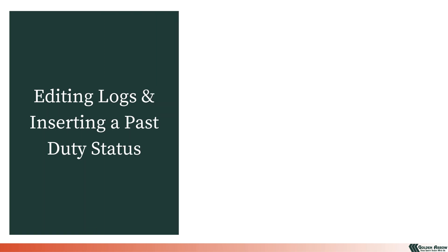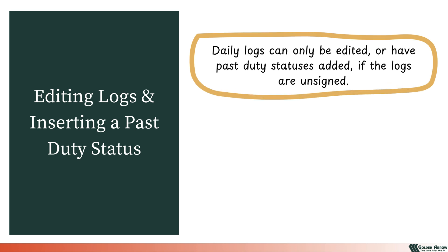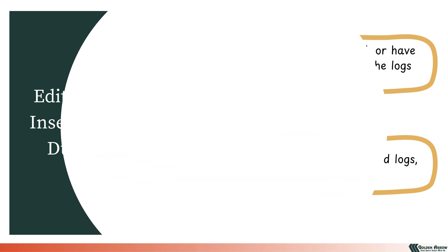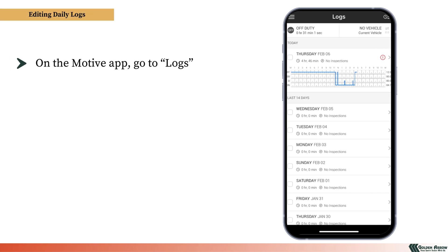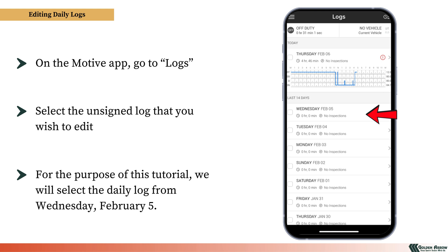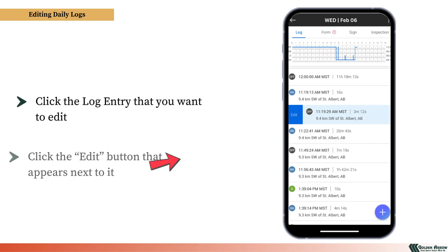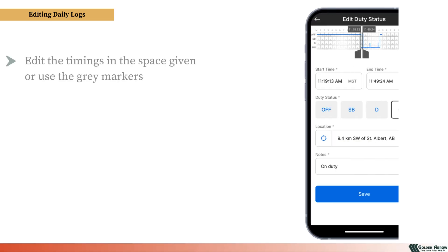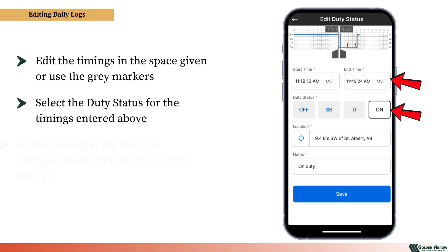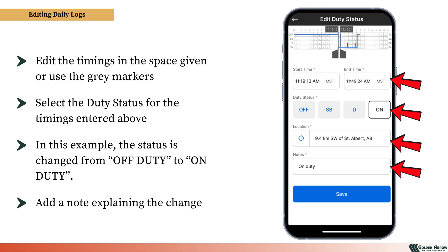We are now going to explore how to edit daily logs and insert a past duty status. Remember, daily logs can only be edited or have past duty statuses added if the logs are unsigned. To request any changes to signed logs, please contact Dispatch. To begin editing a daily log, go to Logs and select the unsigned log you wish to edit. For this tutorial, we will select the daily log from Wednesday, February 5. Click the log entry you want to edit, then click the Edit button. Edit the timings in the space given or use the gray markers. Select the duty status — in this example, the status is changed from off-duty to on-duty. Add a note explaining the change and click Save.